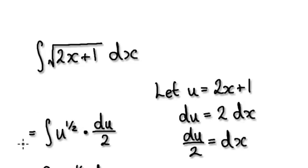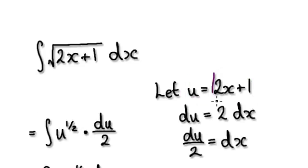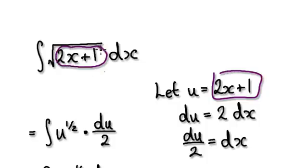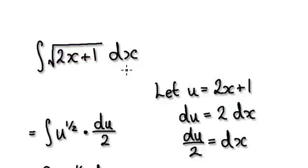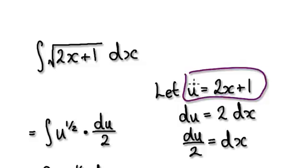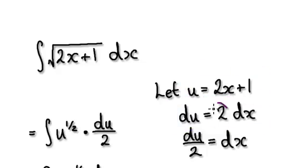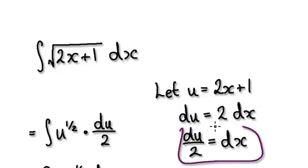Okay, so to do this, let u equal this thing here. So later on, this will become the square root of u — nice and simple. So let u equal this. If u equals this, then du equals this. Divide both sides by 2, and that will give you this.